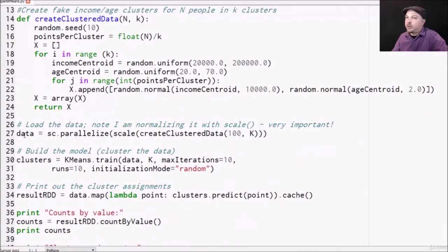We'll skip past this function for now and go to the first line of code that gets run. First thing we're going to do is create an RDD by parallelizing in some fake data that I'm creating. And that's what this create cluster data function does. Basically, I'm telling it to create 100 data points clustered around k-centroids.